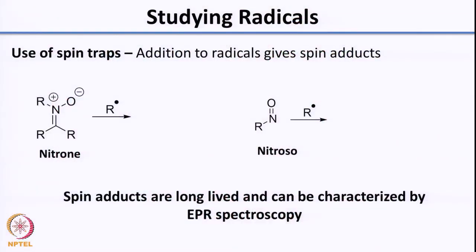Now we will move to studying radicals. When you study radicals, there are two types of traps that are used. One is a type of trap where it still maintains the radical behavior — these are called spin traps because you get a more stable radical. The radical is not quenched or combined with another radical; you are generating a new more stable radical. With the more stable radical, you can study it using techniques such as EPR spectroscopy, which is a type of spectroscopy used to study radicals. You need to choose appropriate traps which would retain the spin or retain the free radical character.